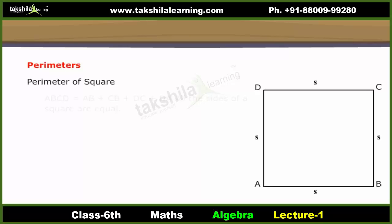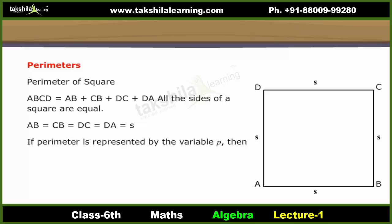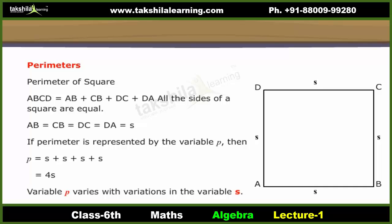Perimeter of square ABCD equals AB plus CB plus DC plus DA. All the sides of a square are equal: AB equals CB equals DC equals DA equals S for side. If perimeter is represented by the variable P, then P equals S plus S plus S plus S, equals 4S. Variable P varies with variations in the variable S.